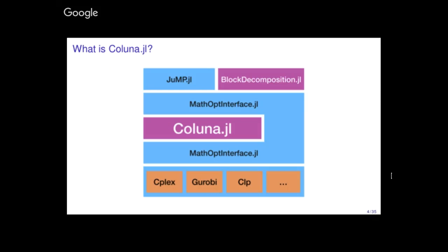This is how Coluna is placed in the JuMP environment. The user is able to use it through the JuMP modeling interface, and for that they also need BlockDecomposition.jl, which is a package also developed by us. It implements a few macros and functions that extend some JuMP functionalities in order to allow the user to define their decomposition using the variables and constraint indices of their JuMP model. Coluna takes all this information to solve the substructures defined by the user using BlockDecomposition.